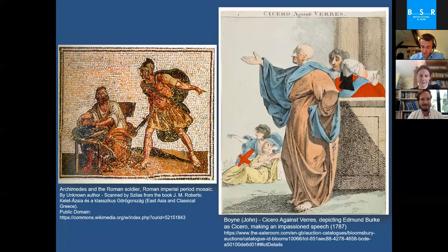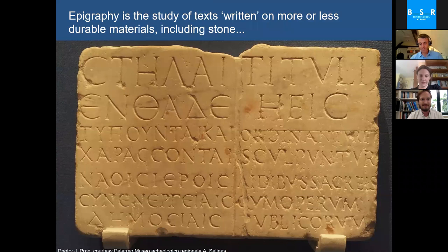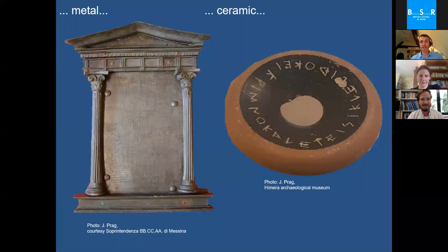There is therefore fundamentally a need for different approaches and other sources — most obviously archaeology — but the source I want to talk about is what we can potentially get from epigraphy. Epigraphy is broadly the study of texts written on more or less durable materials, including stone, metal, ceramic, and indeed just about any other more or less durable material you can think of.